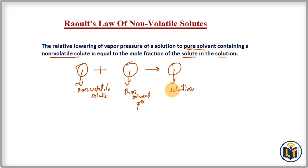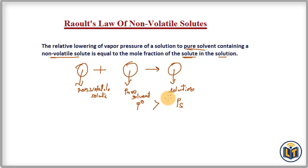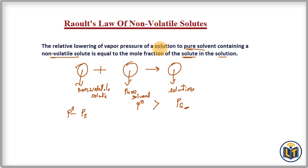If we assume the vapor pressure of the pure solvent is P naught and the vapor pressure of the solution is PS, then the vapor pressure of the pure solvent is greater than the vapor pressure of the solution. From this we can find the lowering of vapor pressure: P naught minus PS gives us the lowering of vapor pressure.